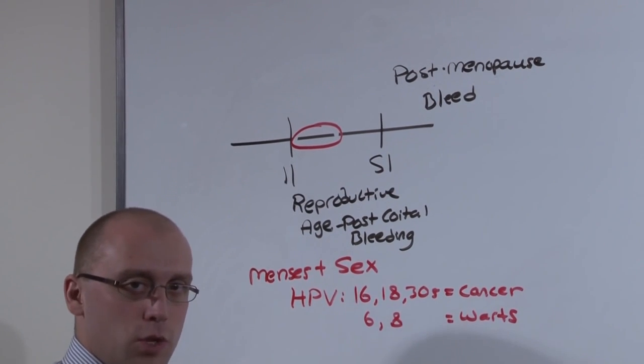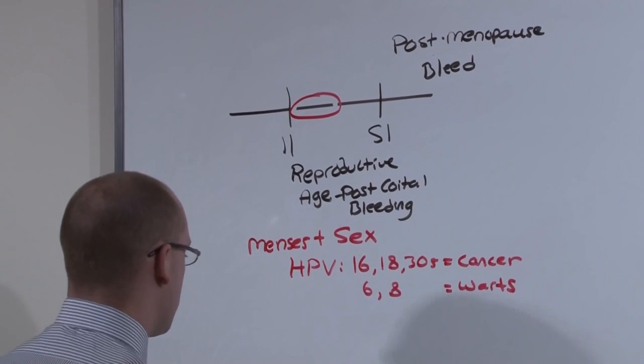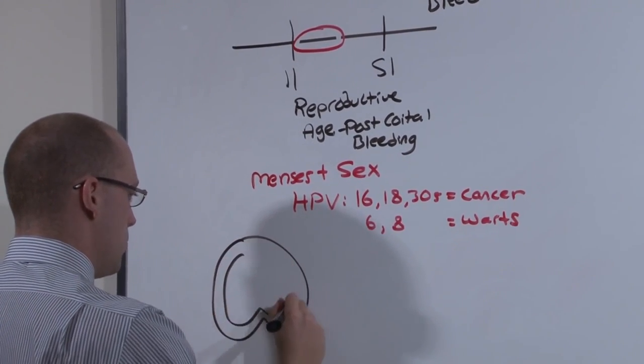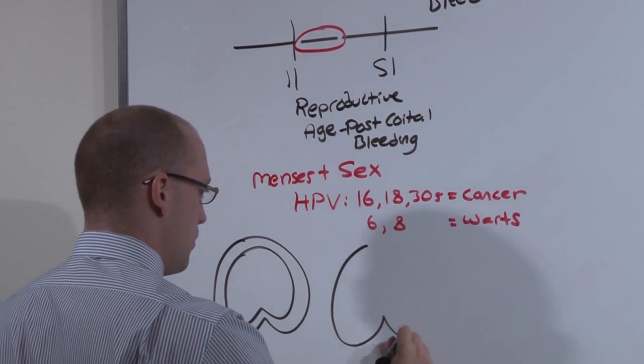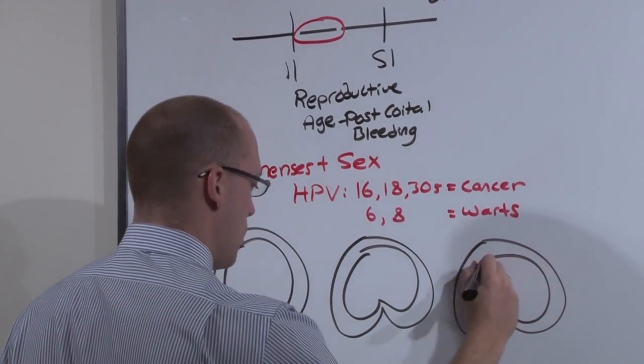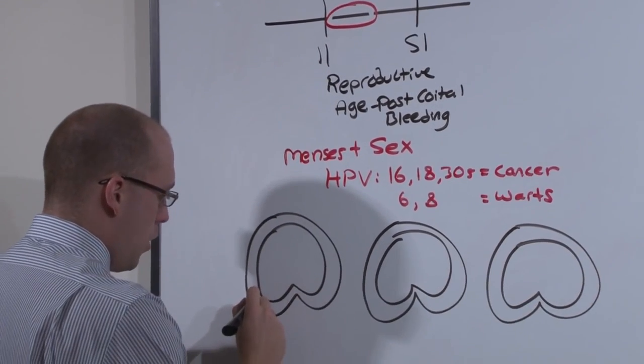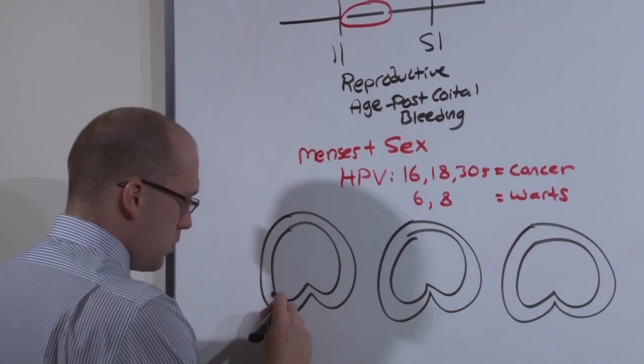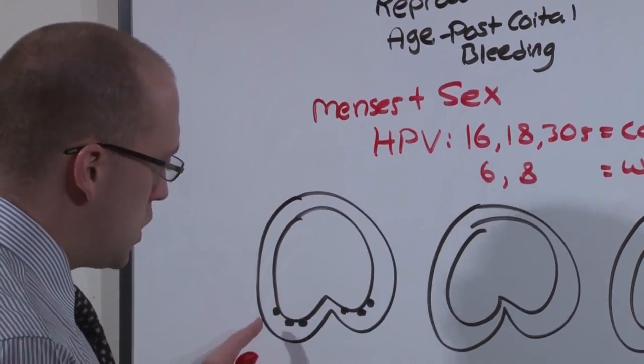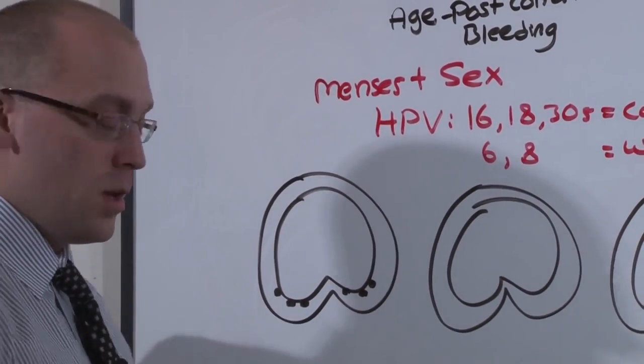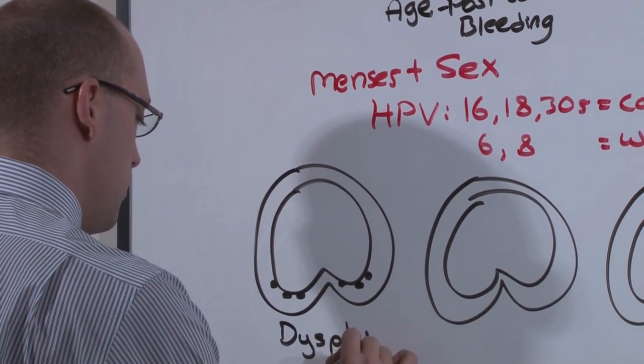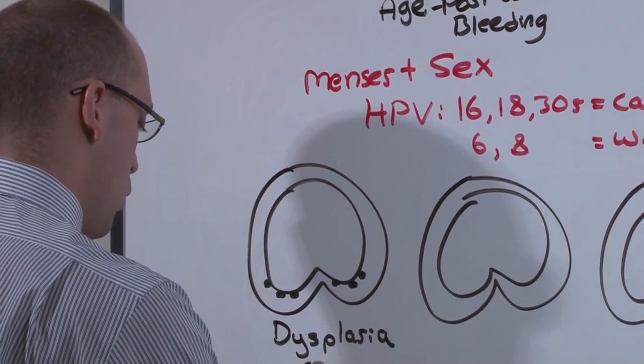Let's take a look at the progression of infection to cancer. This is the uterus. Initially, all that happens is there's infection of the cells at the basement membrane, just a simple little inflammation. This is dysplasia, CIN1.